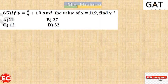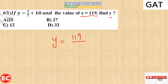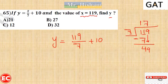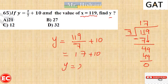Question 65: If y equals x/7 plus 10 and x equals 119, find y. So y equals 119/7 plus 10. Dividing 119 by 7: 7×11=77, 119−77=42, 42/7=6, so 119/7=17. Therefore y equals 17 plus 10 equals 27. The right answer is B.